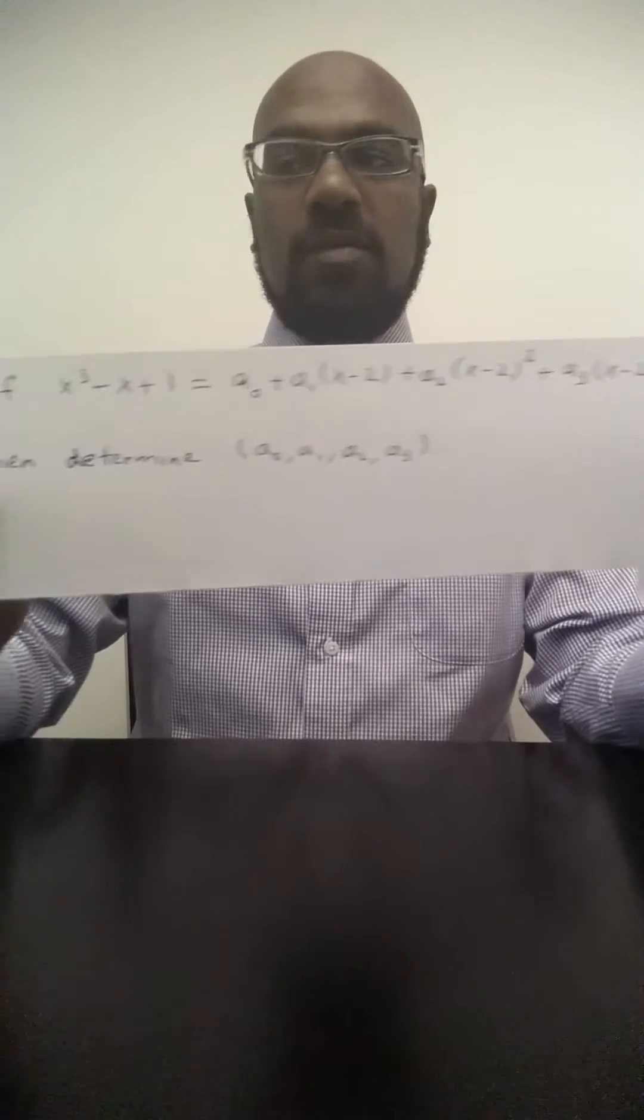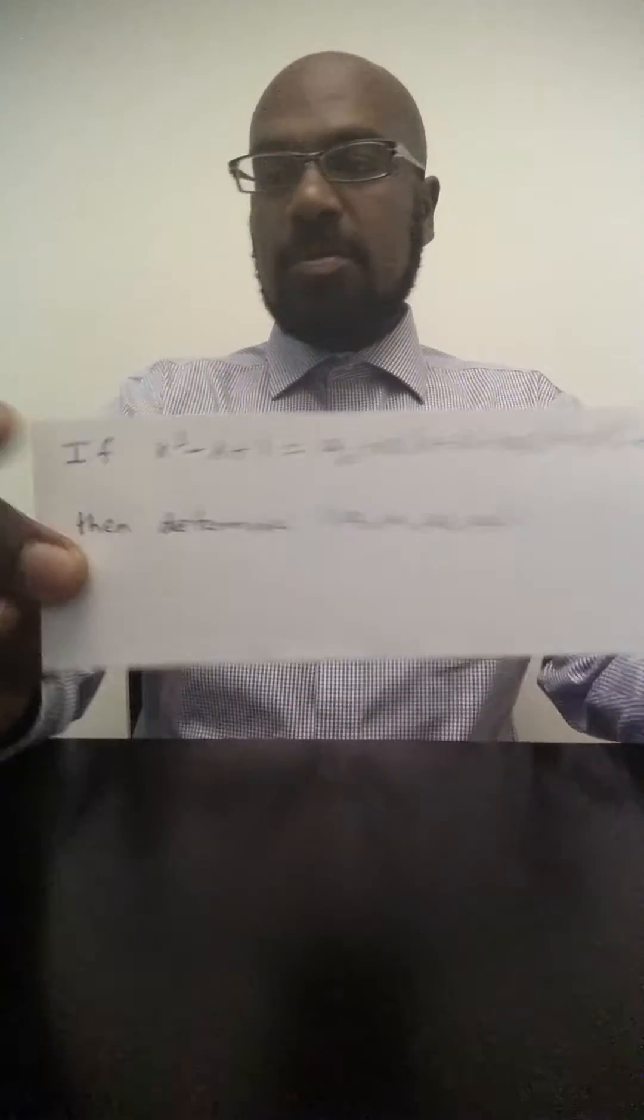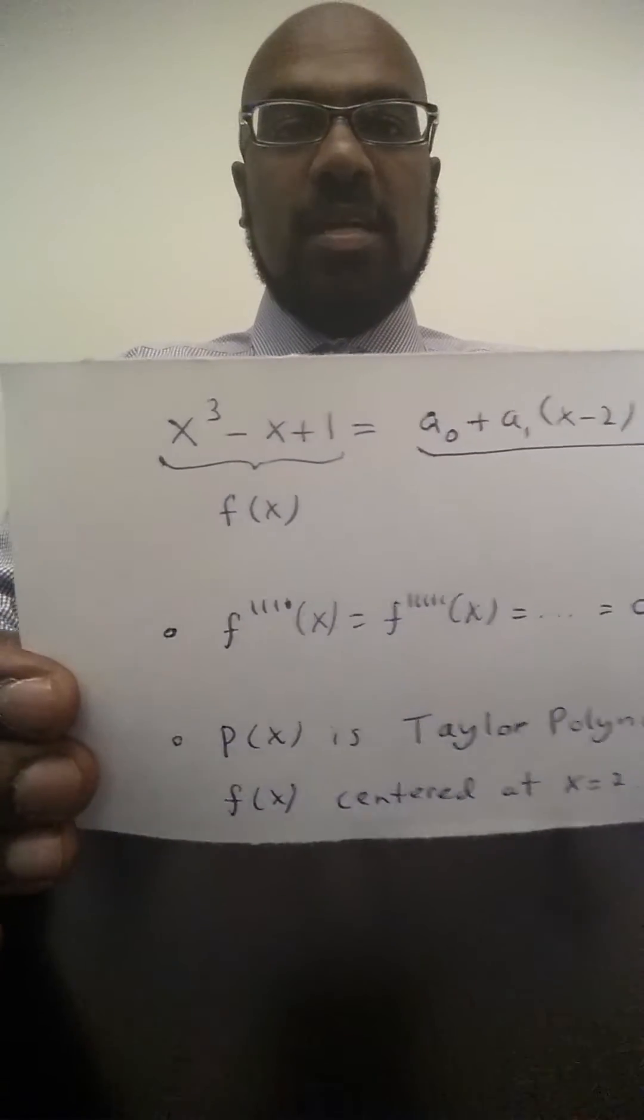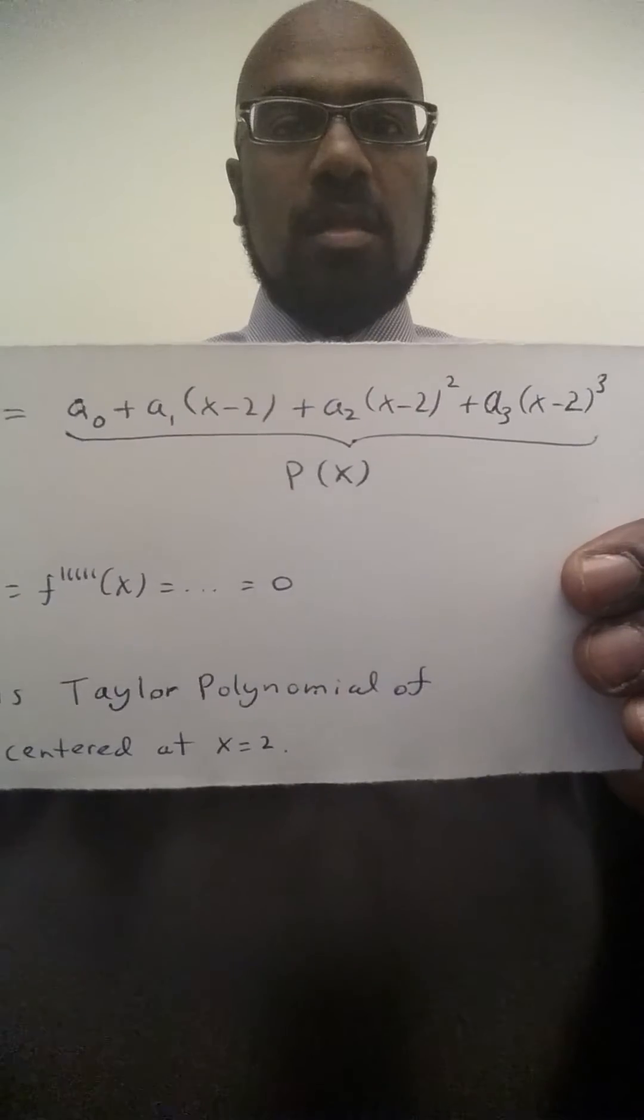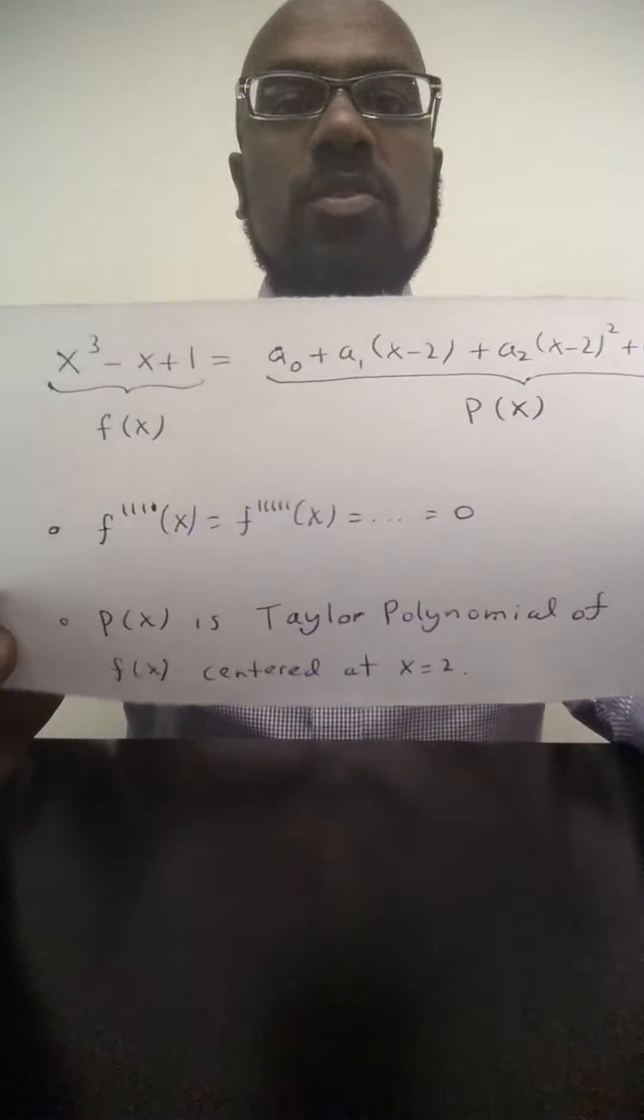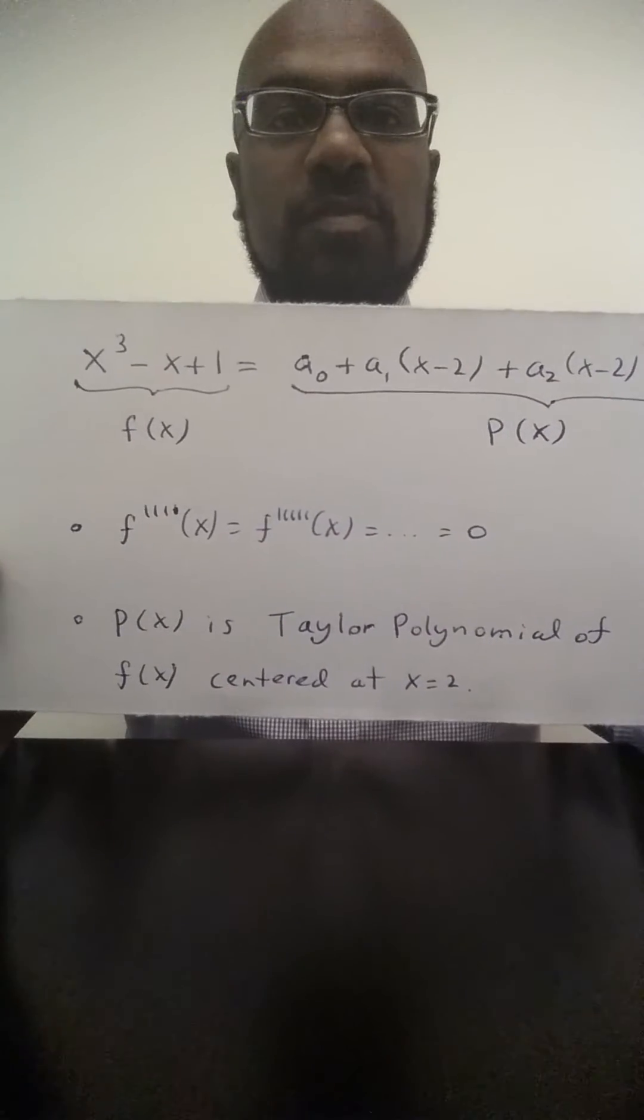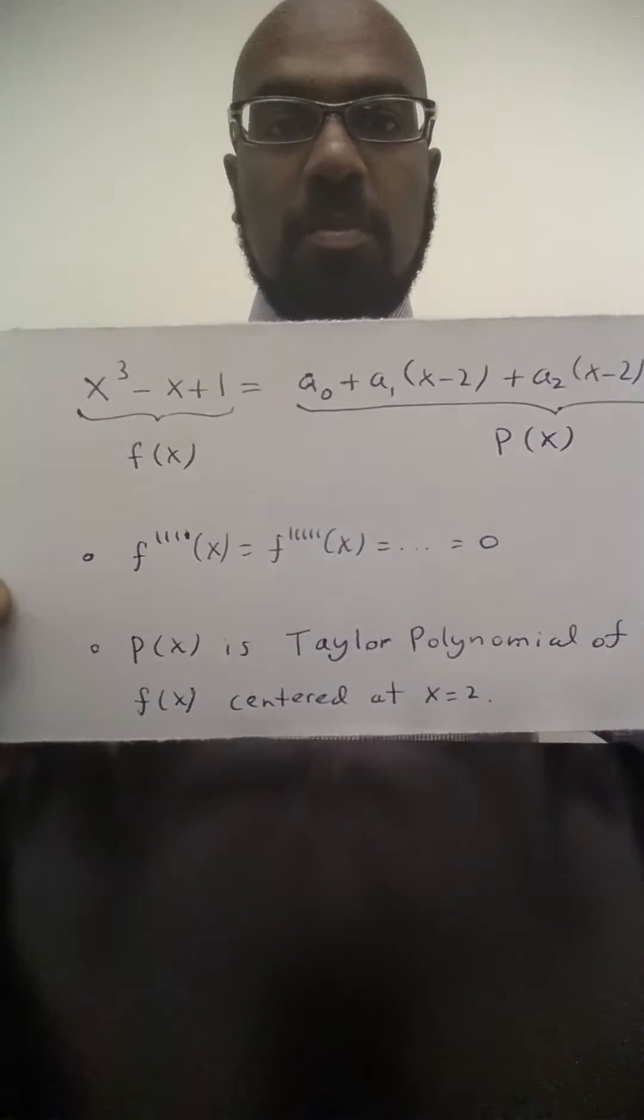So if you take a look at this polynomial here, let's call it f(x), and then the polynomial on the right, let's call that p(x). Then observe that the higher derivatives of f, the fourth derivative, fifth derivative, etc., are zero because f is a cubic polynomial.